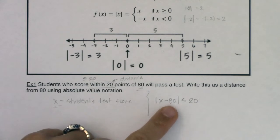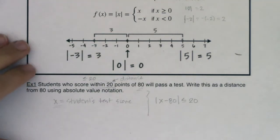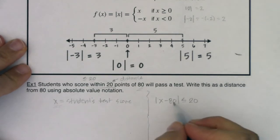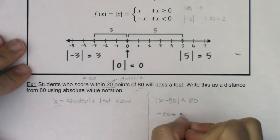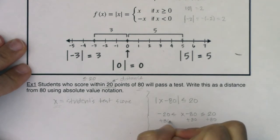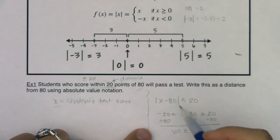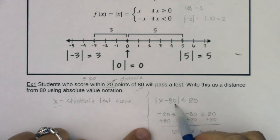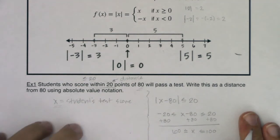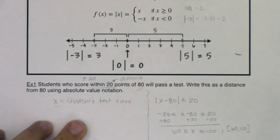Once you have the absolute value inequality, you solve it using techniques from section 2.7 — this is a case two. So: negative 20 is less than or equal to x minus 80 is less than or equal to 20. Adding 80 to all sides gives 60 is less than or equal to x is less than or equal to 100. The solution is anyone who scores between 60 and 100 points. In interval notation, that's the closed interval from 60 to 100 — and that's how you pass this test.